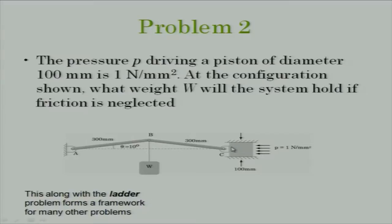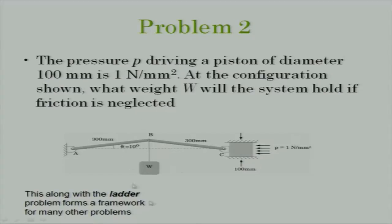At point C, we have a piston which is free to slide in the horizontal direction with no friction. The piston is free to slide. On this mechanism, at point B, we apply some weight. If we do not provide any pressure or resistance, point C will tend to slide in this direction and the system will not be in equilibrium. So to prevent that, we apply some pressure acting on the piston. The diameter of the piston is given, and a horizontal force is generated at point C which will resist the weight.